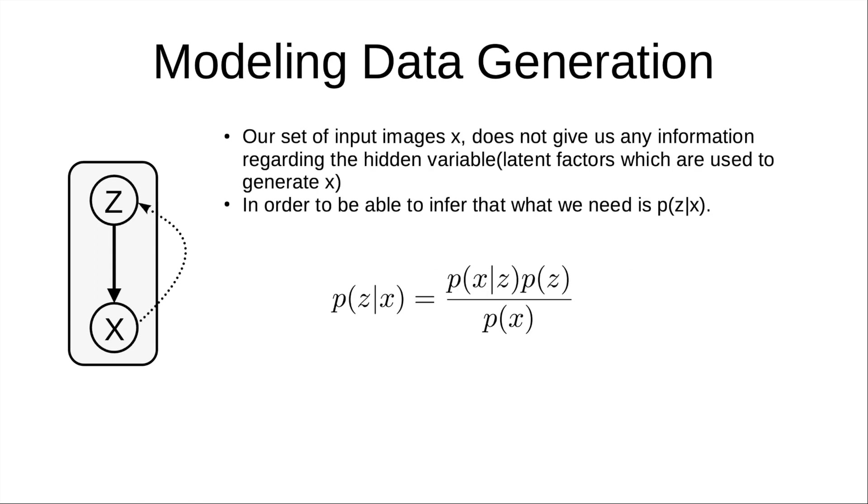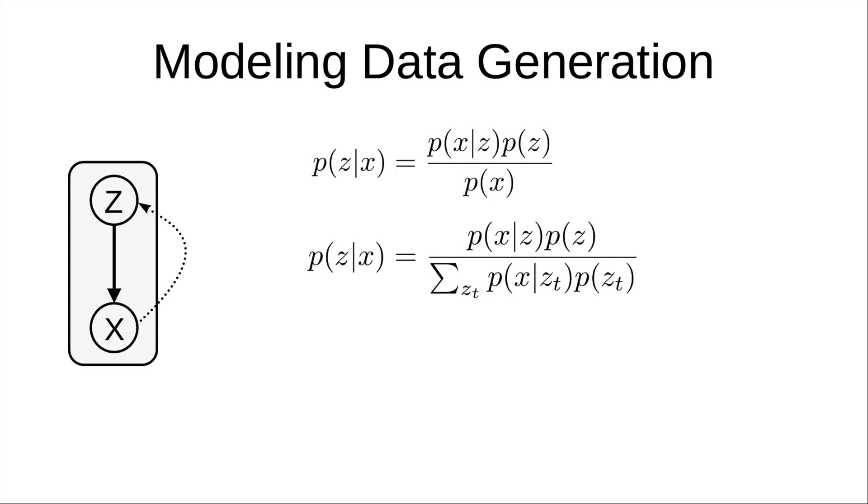Our set of input images, x, does not give us any information regarding the hidden variables or the latent factors which are used to generate. In order to learn to encode the image in the latent space, we need to be able to infer characteristics of z given an input image, and for that, we need p(z|x). Computing p(z|x) using Bayes theorem requires marginalizing z in the denominator. This involves an integration over all possible latent sources of variation z, and for higher dimensional z, either we can't compute this integral or we can't compute it in polynomial time. I'll add links explaining this also in description.